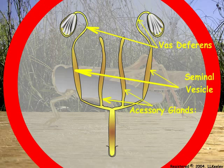Male accessory glands produce products that mix with the sperm to protect and preserve the sperm. Some insect species produce a spermatophore that encloses the sperm and is passed to the female during mating. Other insects transfer sperm without a spermatophore.